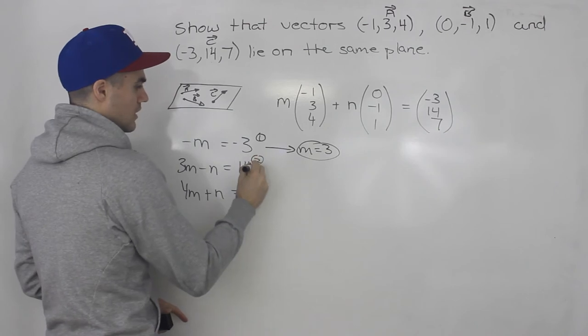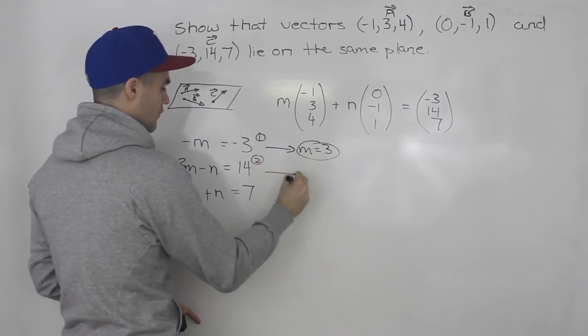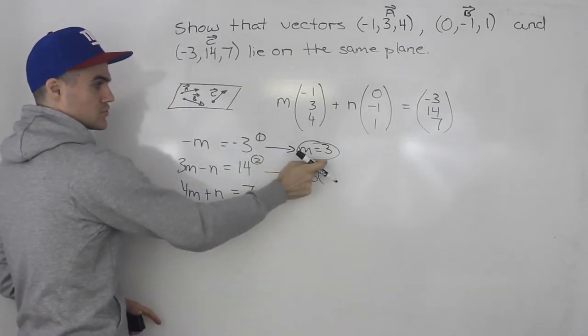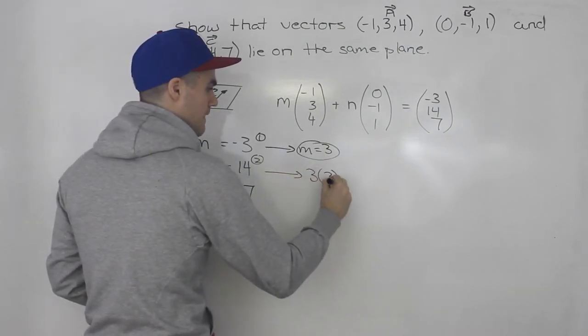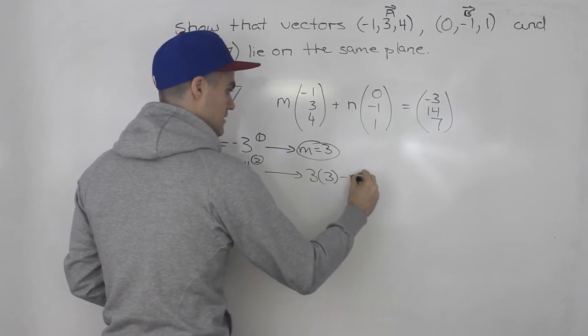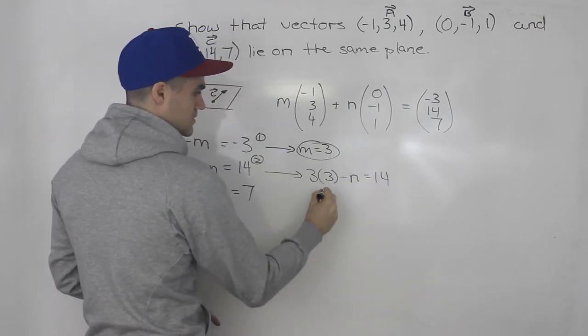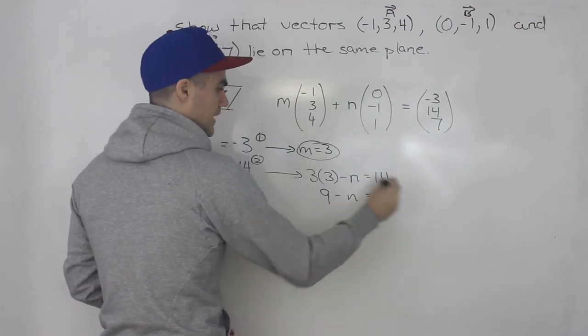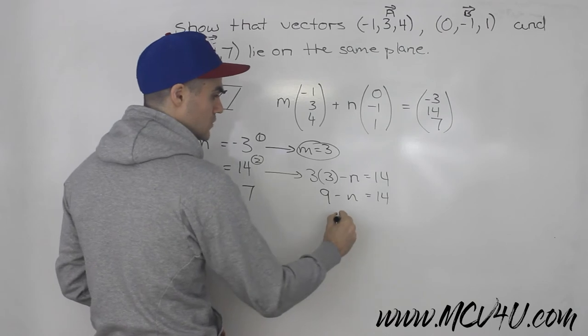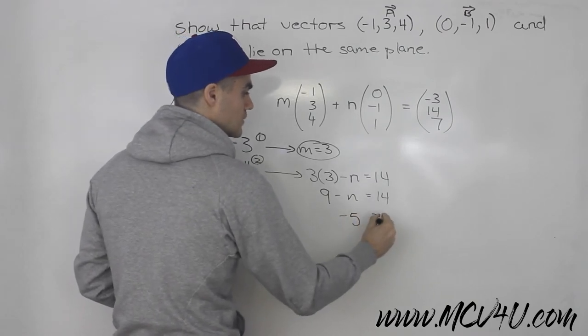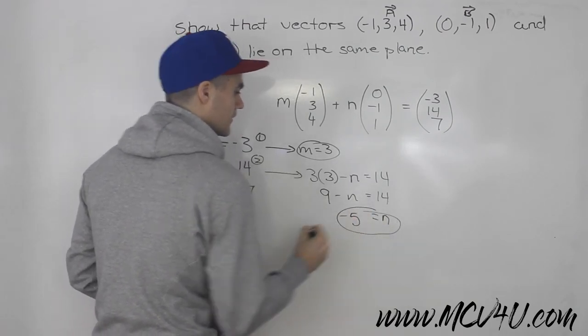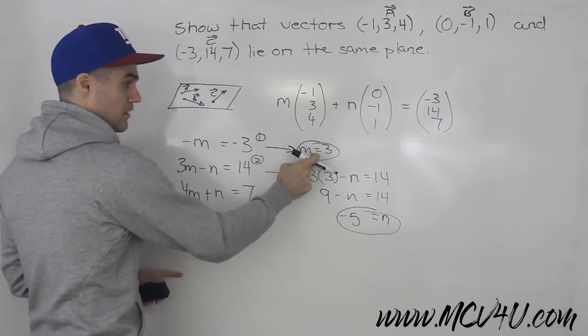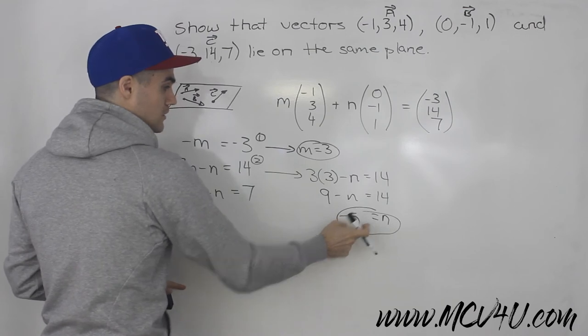And then let's use equation 2 to solve for this n value. So we got 3 times m, which we know is 3 up here, minus n is equal to 14. So we got 9 minus n is equal to 14. Let's bring the negative n over, bring the 14 over, we'll have 9 minus 14, so -5 equals n. So using equations 1 and 2, we solve for m being 3, and we solve for n equaling -5.